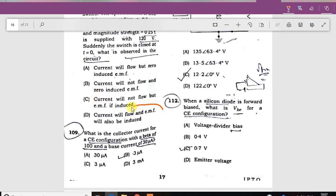What is the collector current from the emitter with beta of 100, then the base current 30 micro ampere? This answer is equal to 3 milliampere.